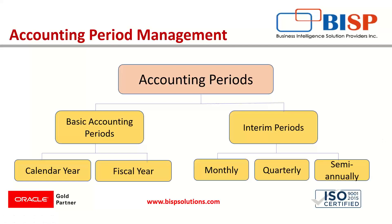There are basically two types of accounting periods. The first is the basic accounting period, which includes the calendar year — starting January 1st and ending December 31st — and the fiscal year, a one-year period used by companies and governments for reporting and budgeting purposes that varies by country. The second type is the interim period, which is not a 12-month period; it can be monthly, quarterly, or semi-annually.